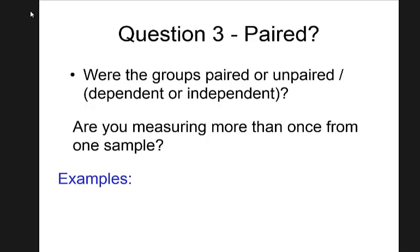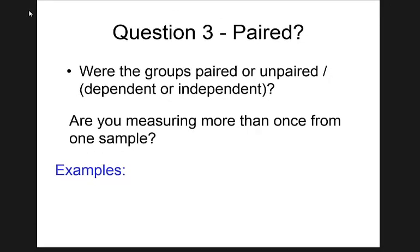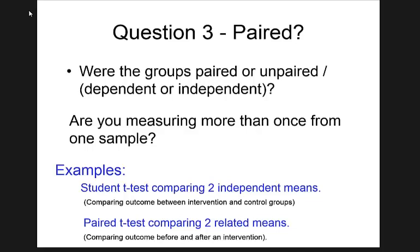Whether two people are related or not directly affects the probability computation — that's the p-value. That's why statisticians ask: are these two measurements from the same mouse or different mice? If data are independent, you pick a student t-test (independent sample t-test). For related data, you use a paired sample t-test. Those are two different tests.